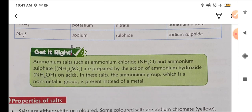Get it right: ammonium salts such as ammonium chloride (NH4Cl) and ammonium sulfate ((NH4)2SO4) are prepared by the action of ammonium hydroxide (NH4OH) on acids. In these salts, the ammonium group (NH4), which is a non-metallic group, is present instead of metal. This is an exceptional case.